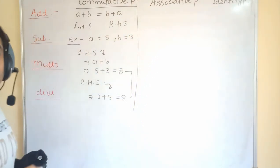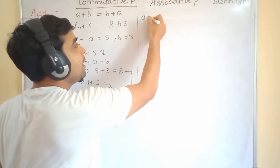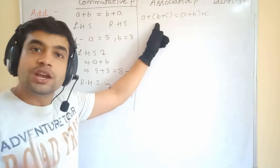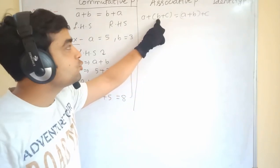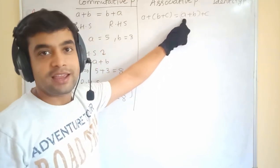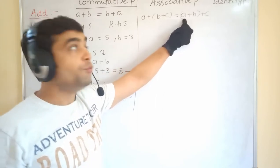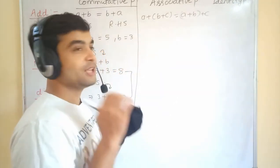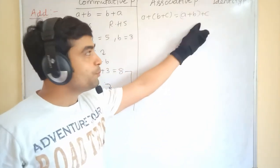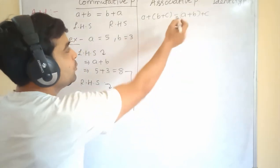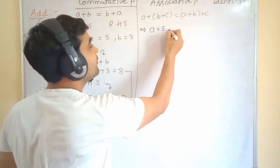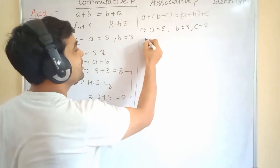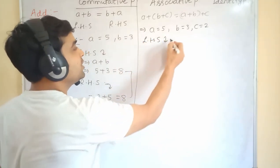Now we are going to see associative property. According to associative property, a + (b + c) must be equal to (a + b) + c. Basically, we are associating b with different values — first time b is associated with c, second time b is associated with a. That is why it is called associative property. We are going to check this for addition with an example: a = 5, b = 3, c = 2.